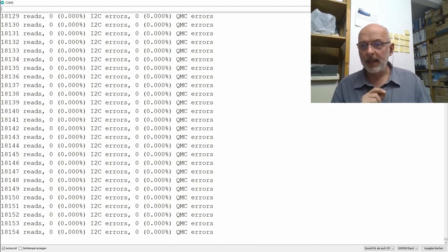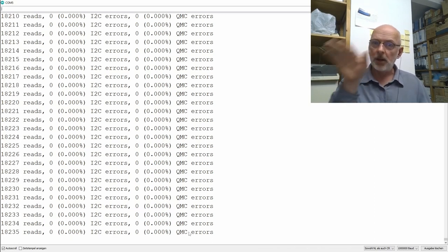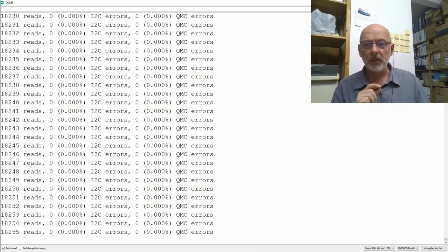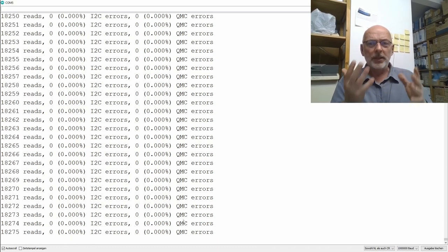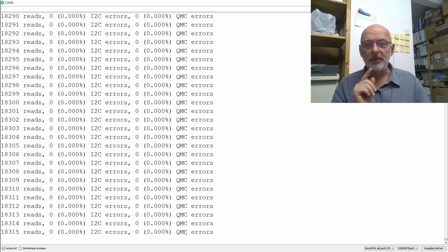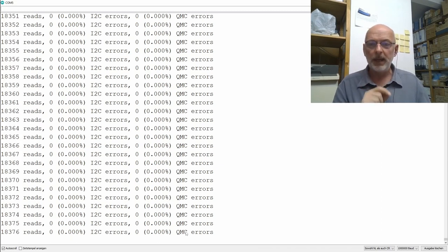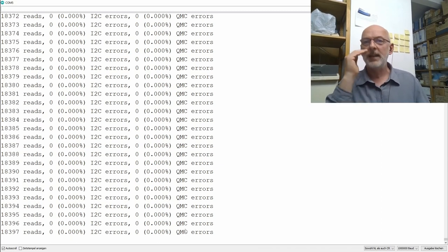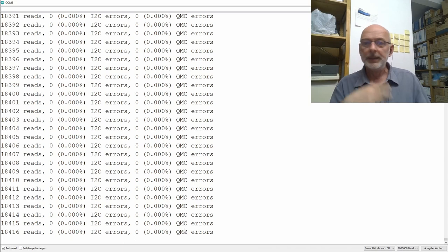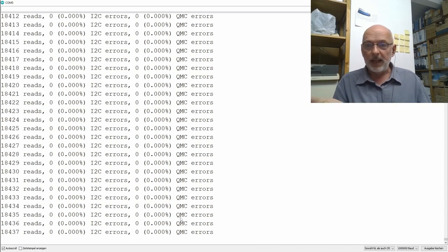I let that thing run for a while. We are now at 18,000 reads and not a single I2C error. The QMC data overflow errors are also gone. I never could explain them in the first place. My best guess is that was also an I2C transmission error, so for some reason that data overflow bit got set in the data status register. Anyway, everything's fine now.